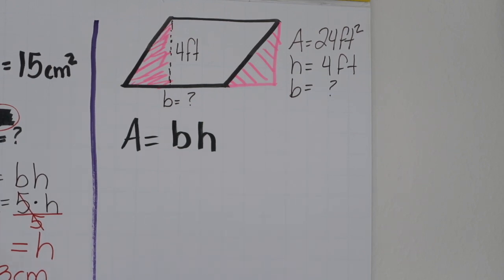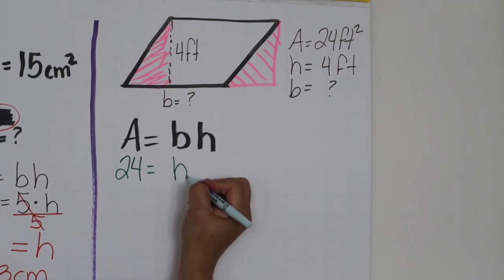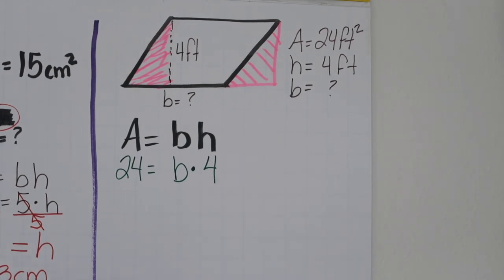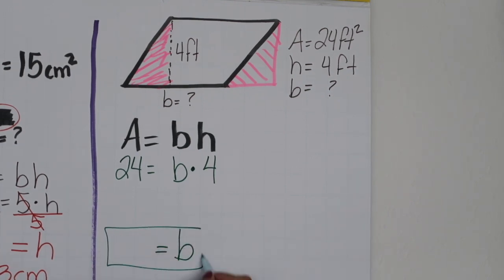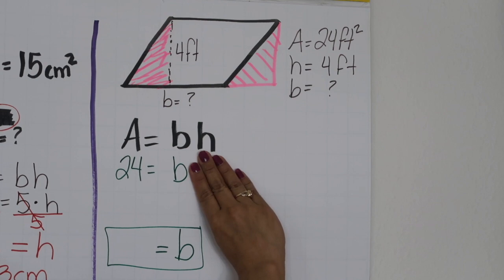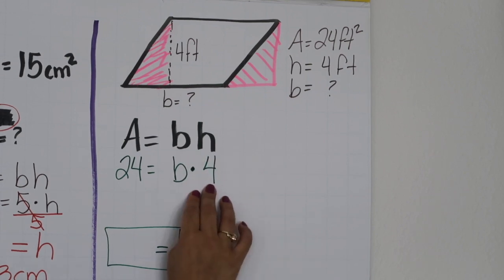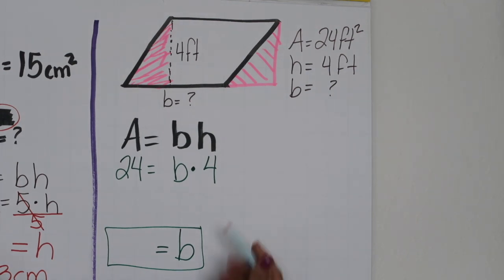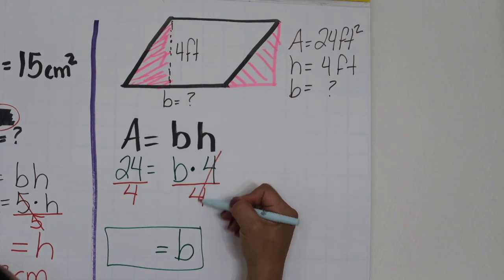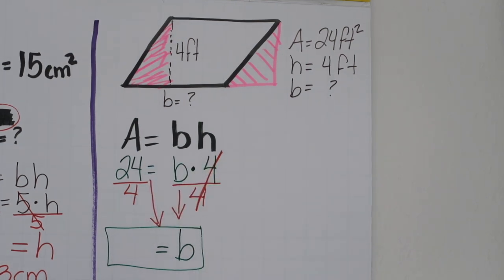Let's start substituting the numbers. I'm going to substitute 24 for A. The base we don't have, but we do have the height, which is 4 feet. We're trying to find the base. To get rid of the 4, we do the opposite operation — the opposite of multiplication is division — so we divide by 4 on both sides. 4 divided by 4 is 1, so we cancel those out.